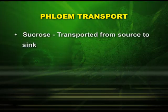In plants, food is transported through phloem. The food is prepared in the plant in the form of sucrose, which is transported from source to sink. The source is the leaves where the plant synthesizes food, and the sink refers to the storage organs where the food is used.